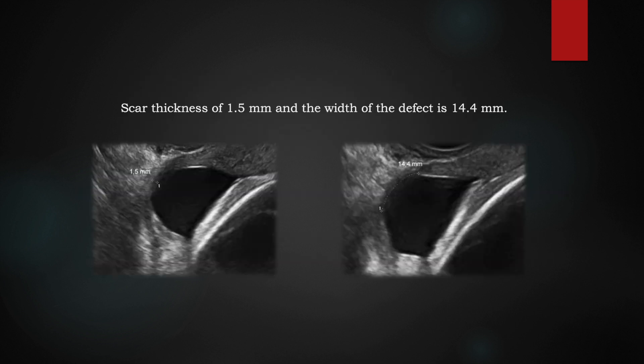Here is one example in which we can see thinning of the scar at 1.5 mm, with ballooning of the membranes. This thinning of the scar is seen for a length of about 14.4 mm, approximately 1.5 cm. All these details need to be mentioned in the report.